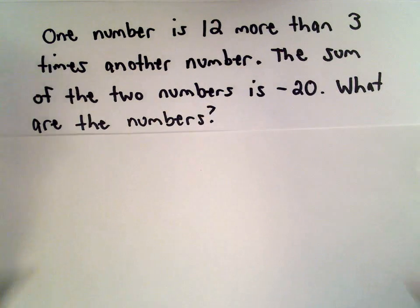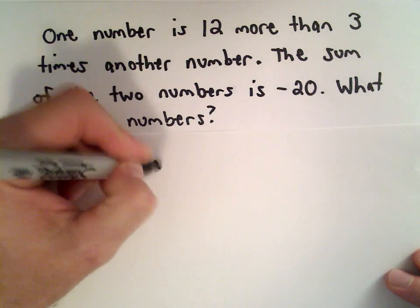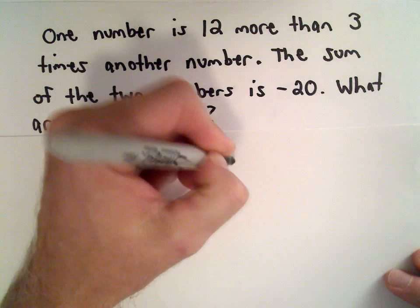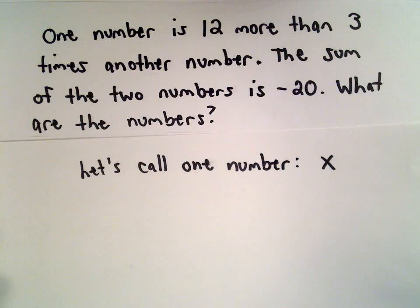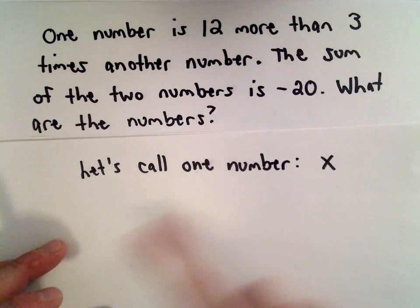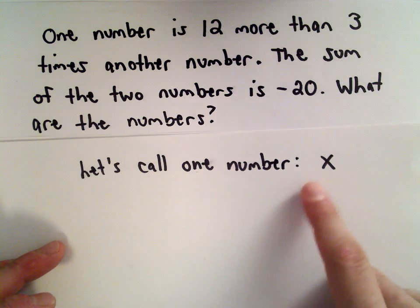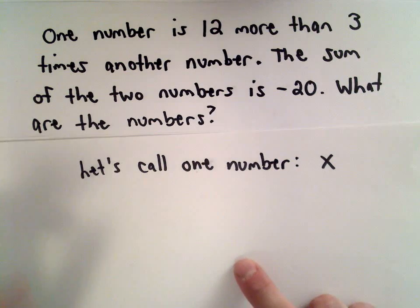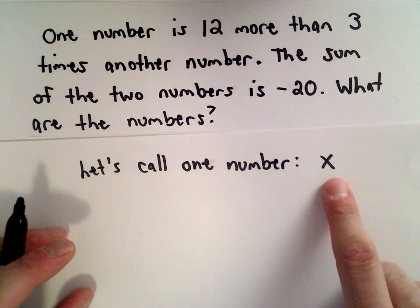We don't know the numbers. Let's call one number—you know what we're going to call it—we're going to call it x. That's our catch-all variable. We could call the other number a different variable like y, but I'm going to use this information to label the other number. So let's call one number x.